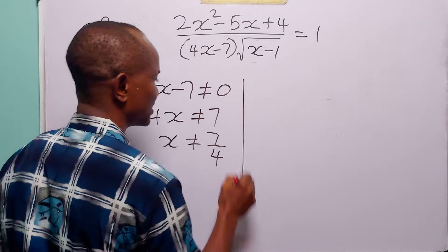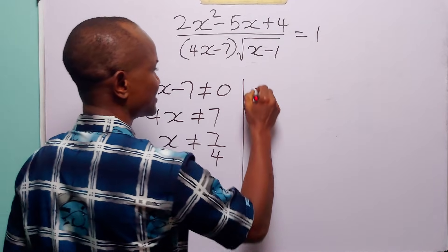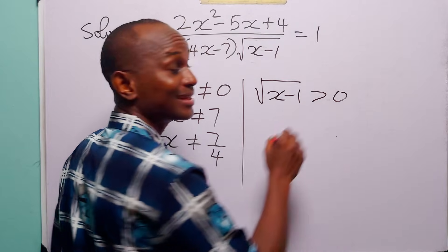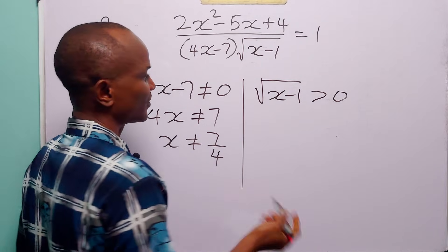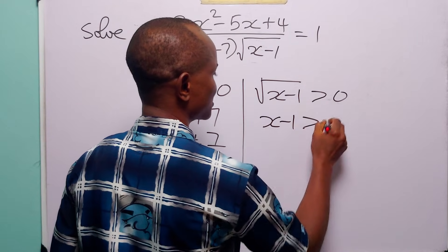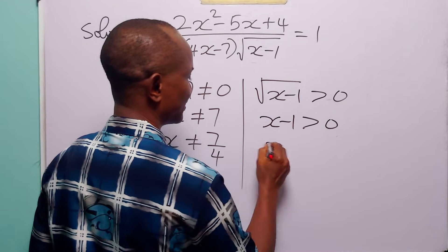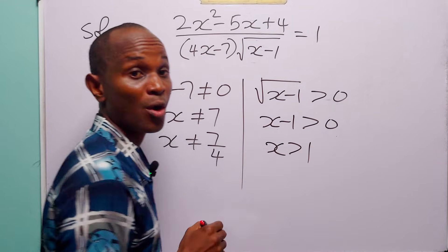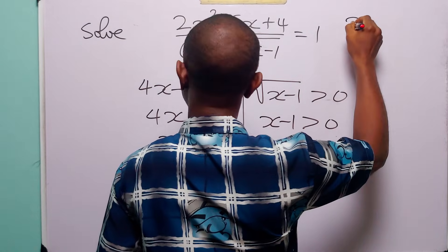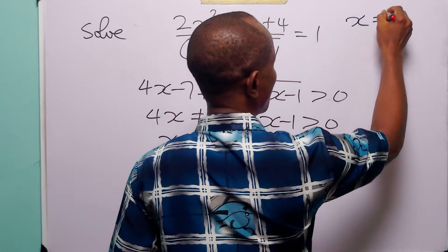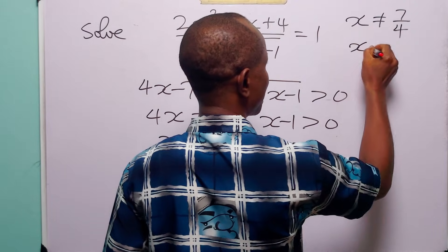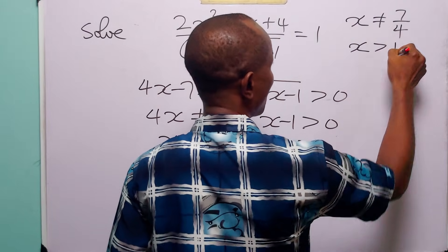The second condition is that the square root of x minus 1 must be greater than 0. From here, we have that x minus 1 must be greater than 0 and x must be greater than 1. So already, we have that x must not be equal to 7 over 4 and x must be greater than 1.